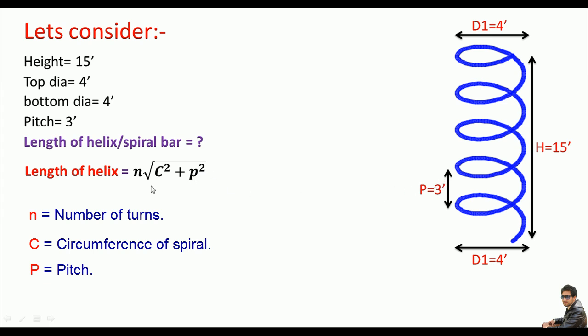Let me calculate n first. I can get n if I divide the total height of the spiral by pitch. The height is 15 feet and the pitch is 3 feet. So 15 divided by 3 is 5. So the number of turns in the spiral bar are 5.